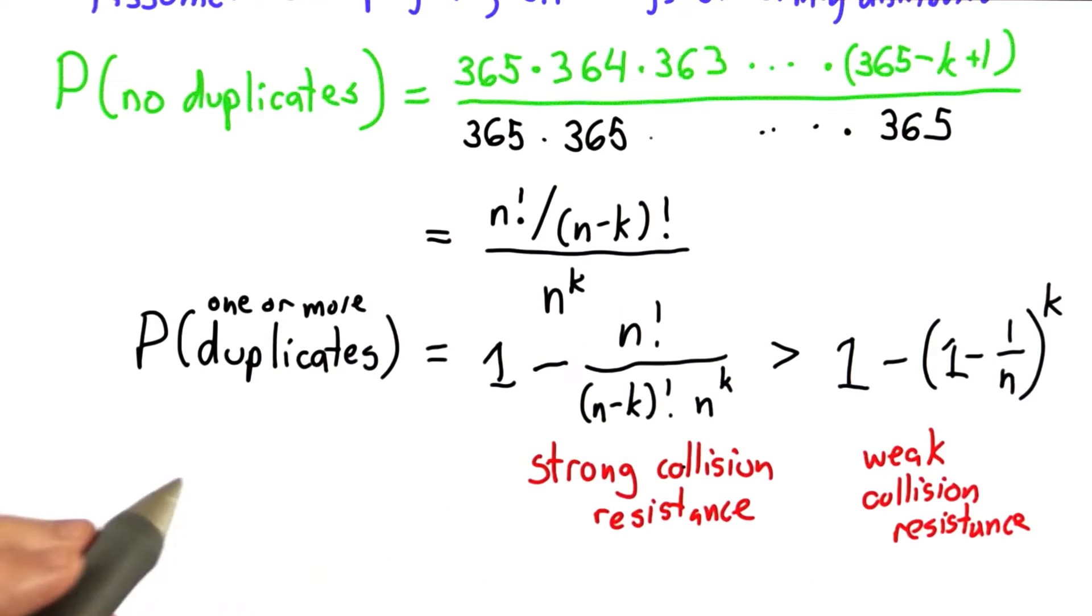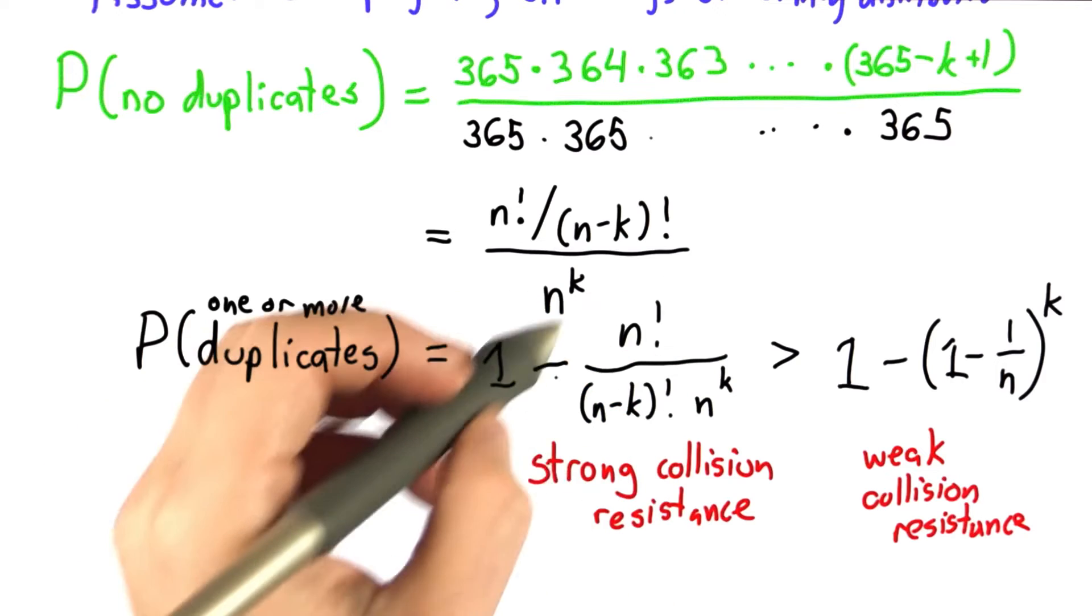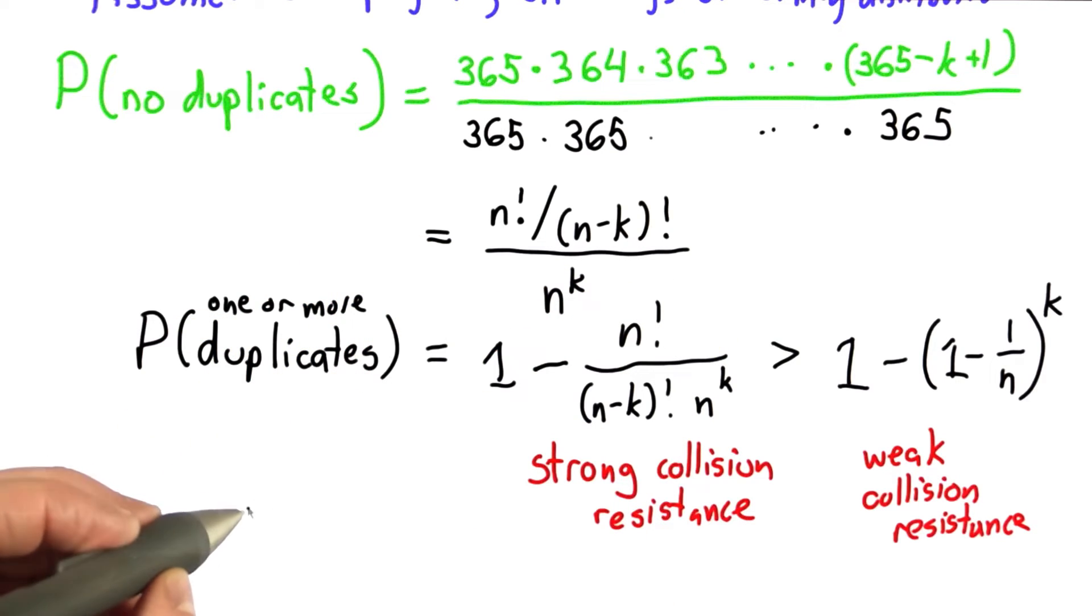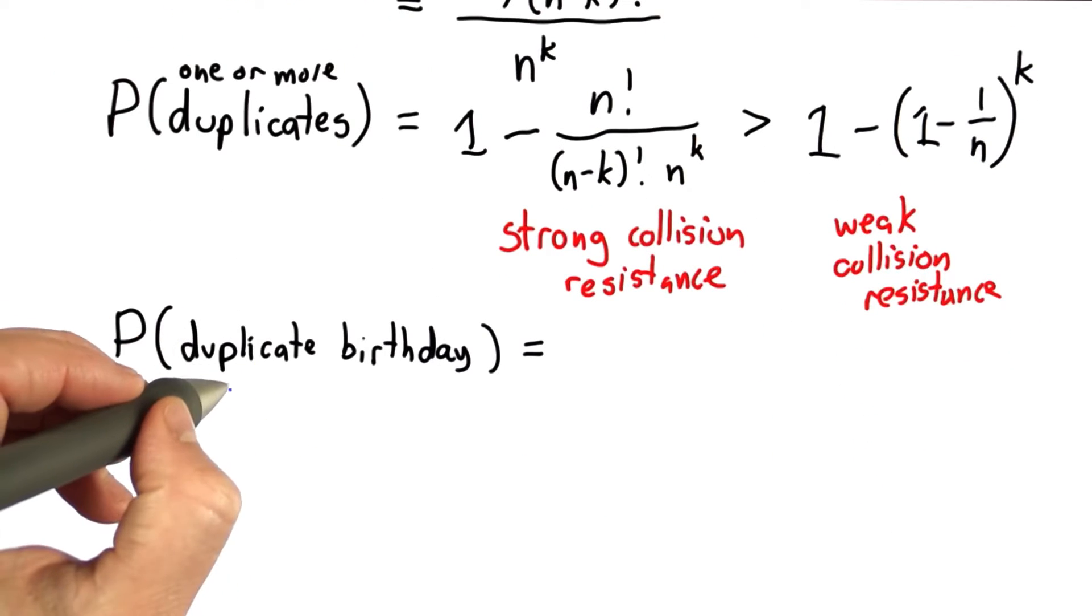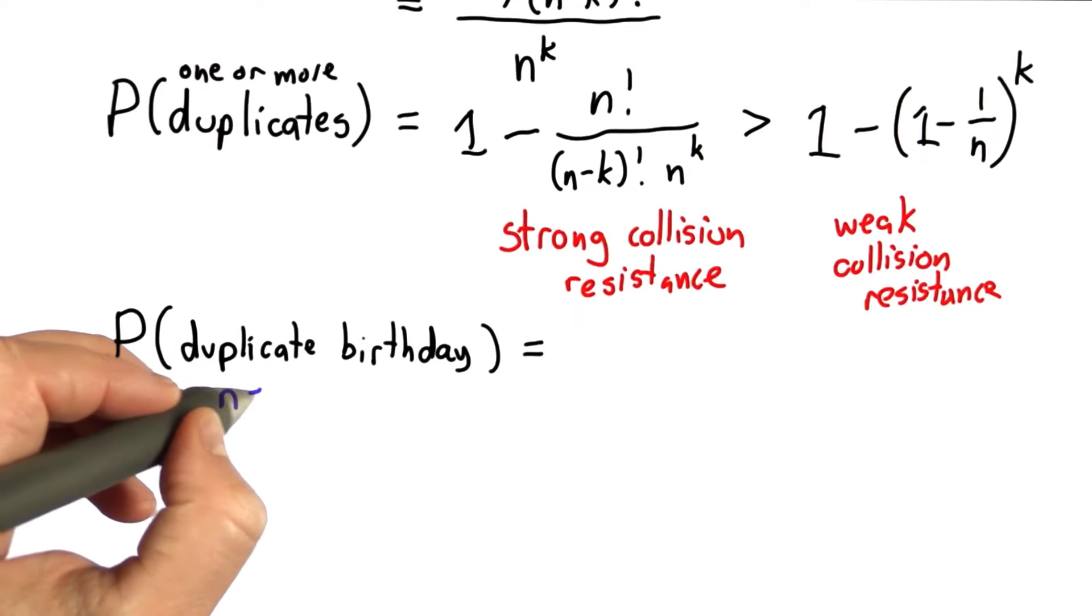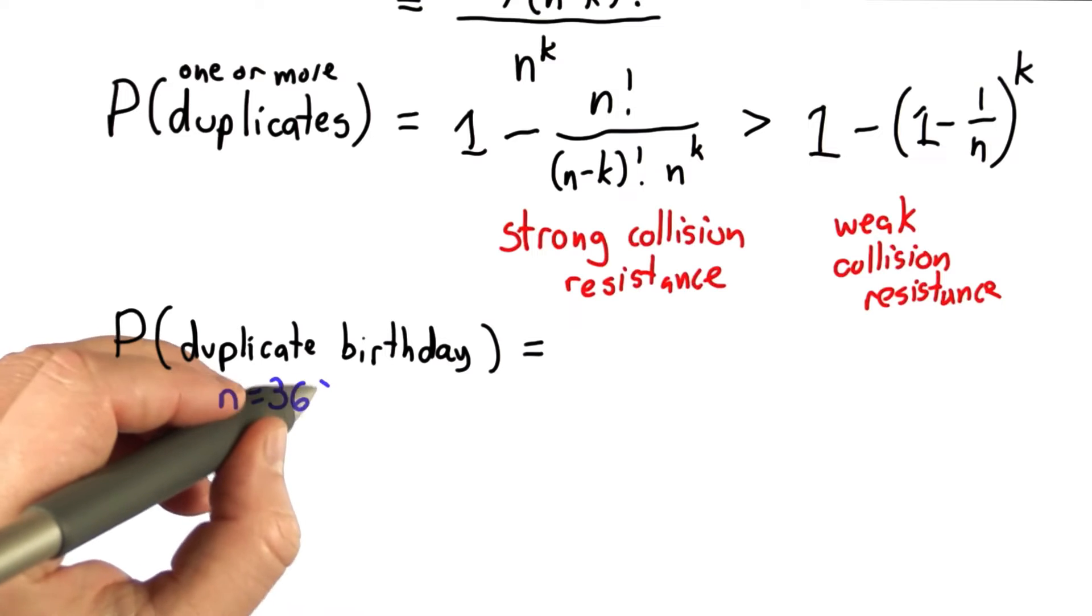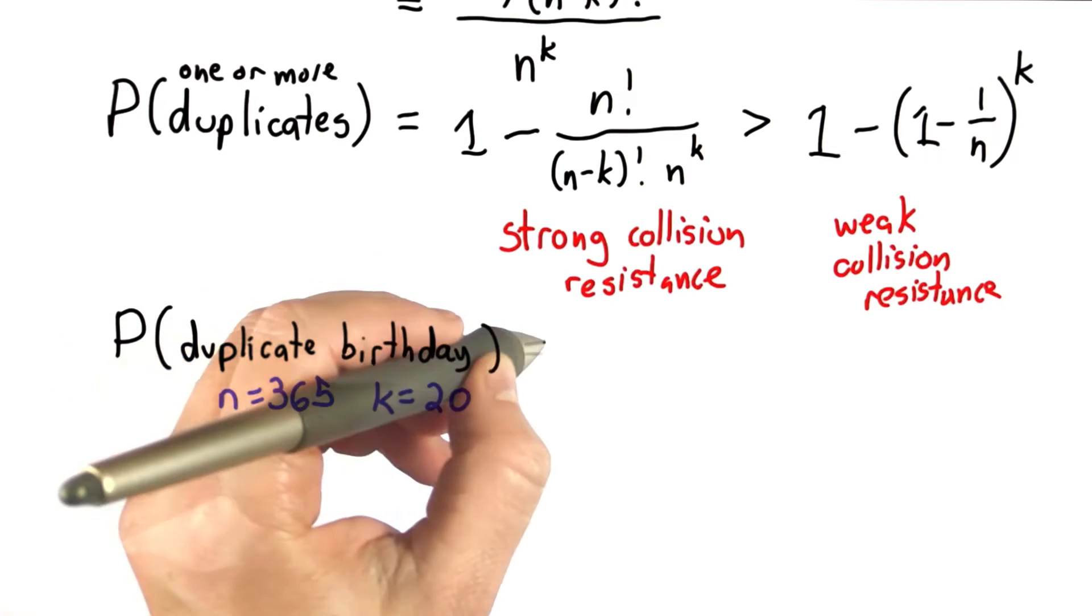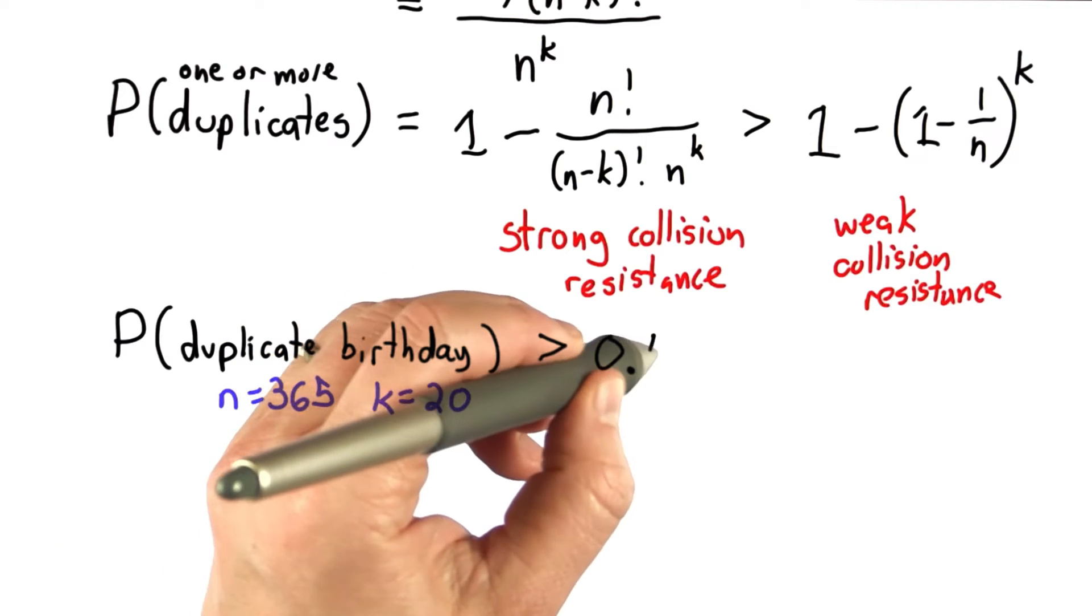To actually compute this, these numbers would get really big if we tried to actually compute the factorials. Instead, we need to use approximations to do this, but to give you some idea what the results are like. If we have the duplicate birthday question where we have 365 days and 20 people, the probability that there's at least 1 duplicate exceeds 0.4.